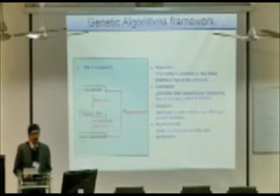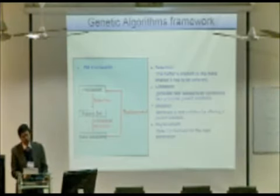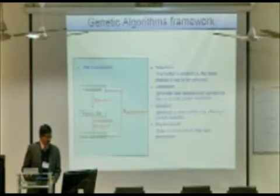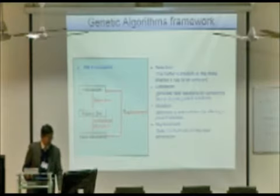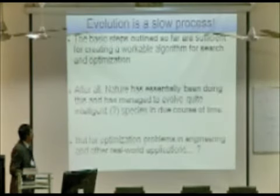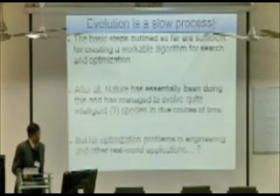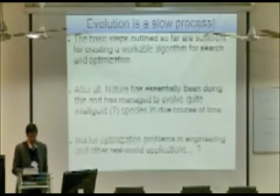Here they try to mimic nature. You have a population of individuals which form the parent set, combined with each other through crossover and mutation produce children. You find out which children are more effective than the others according to your chosen criterion and then give them a higher probability of participating in producing more children in the next generation just as evolution does. The basic steps are sufficient. That is what nature has essentially been doing and has managed to evolve what we believe intelligent species. That's us. But for optimization problems in engineering and other real world applications this could be pretty slow.